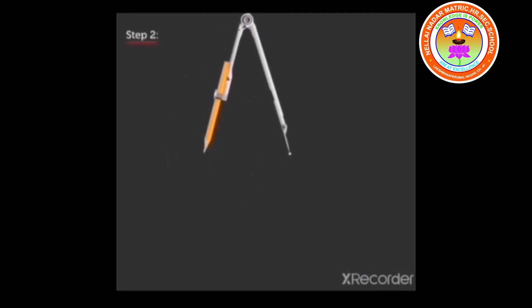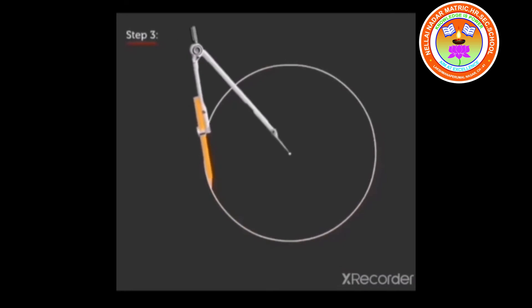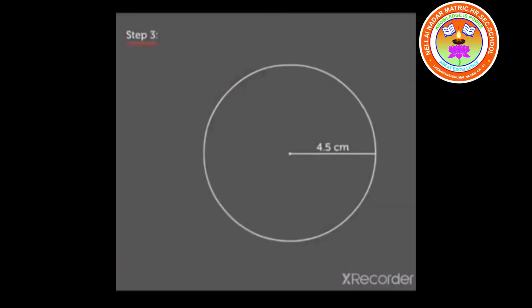Step 3: Move the pencil around it in any direction till you return to the starting point. Now, we have drawn a circle using compass with radius 4.5 cm.